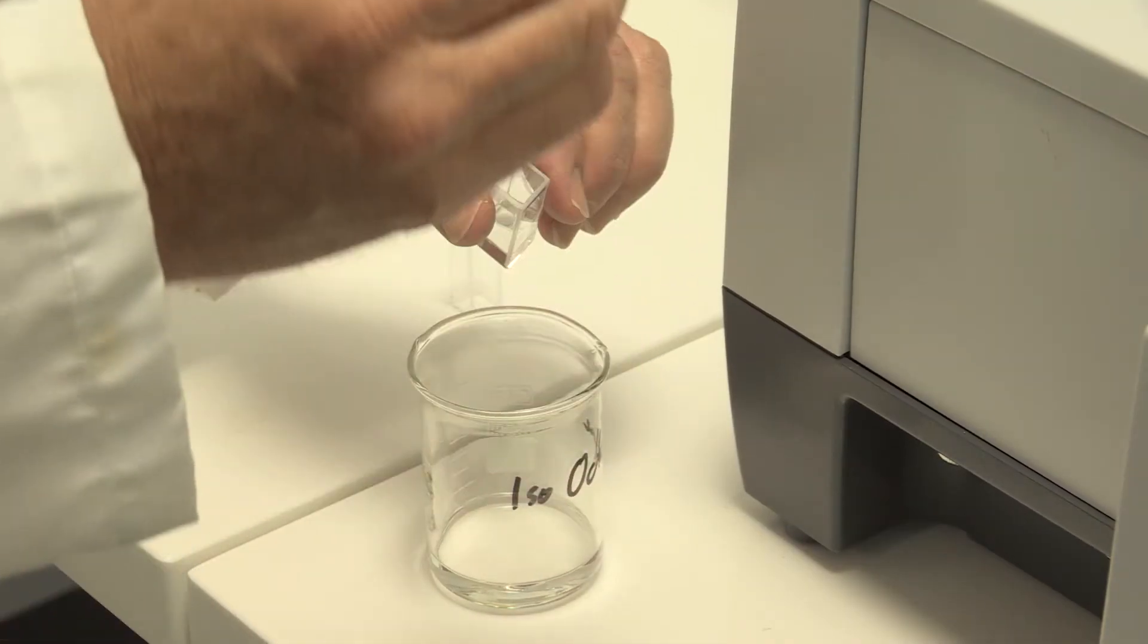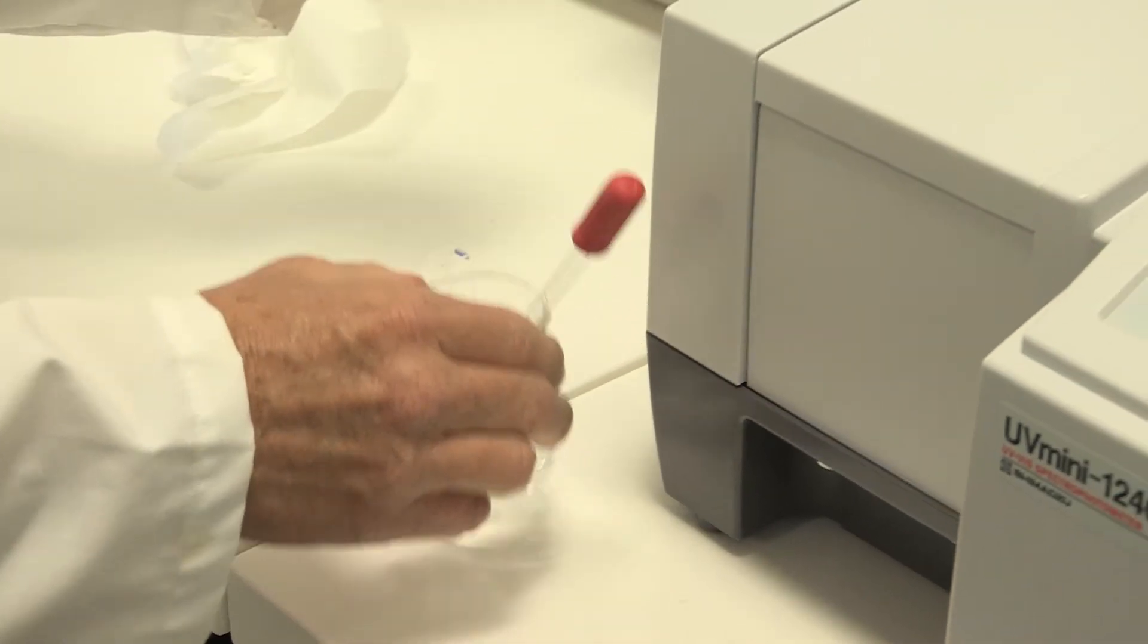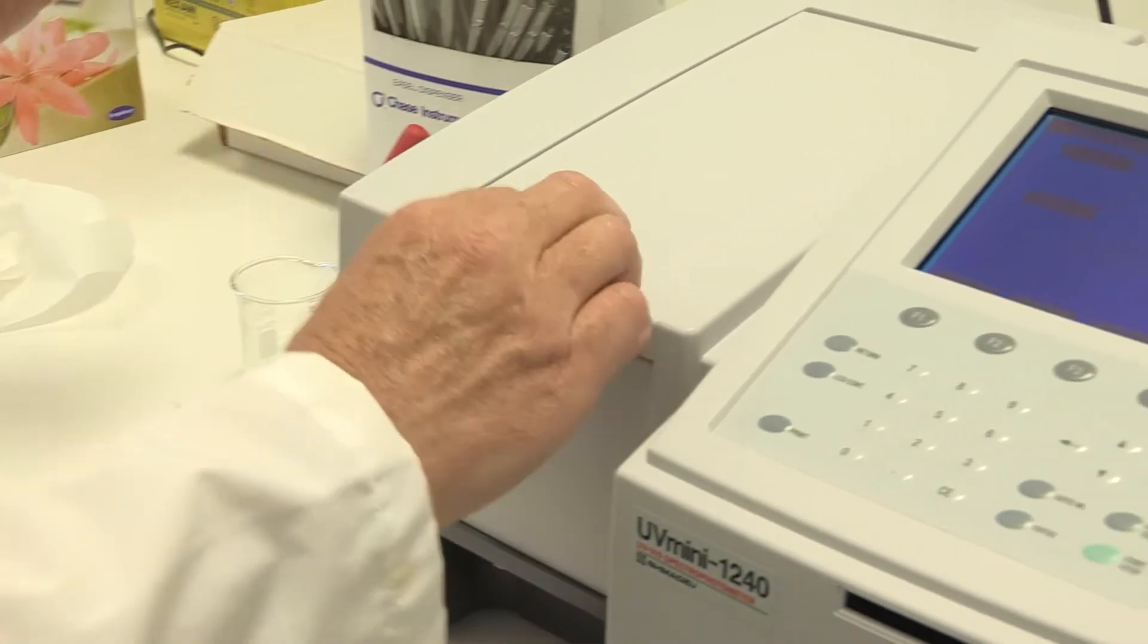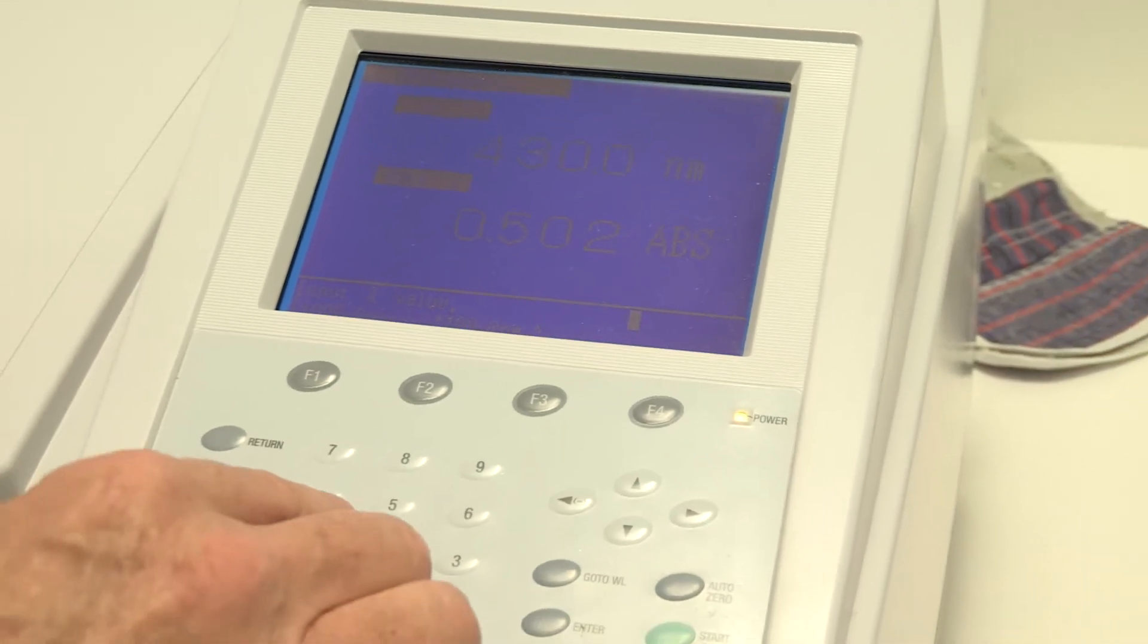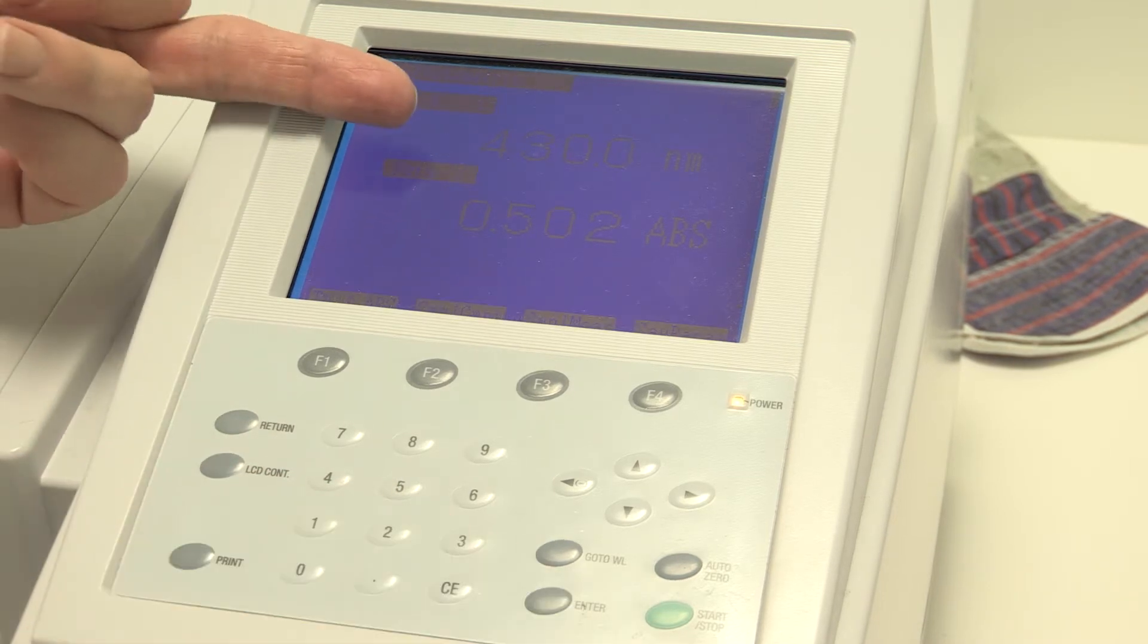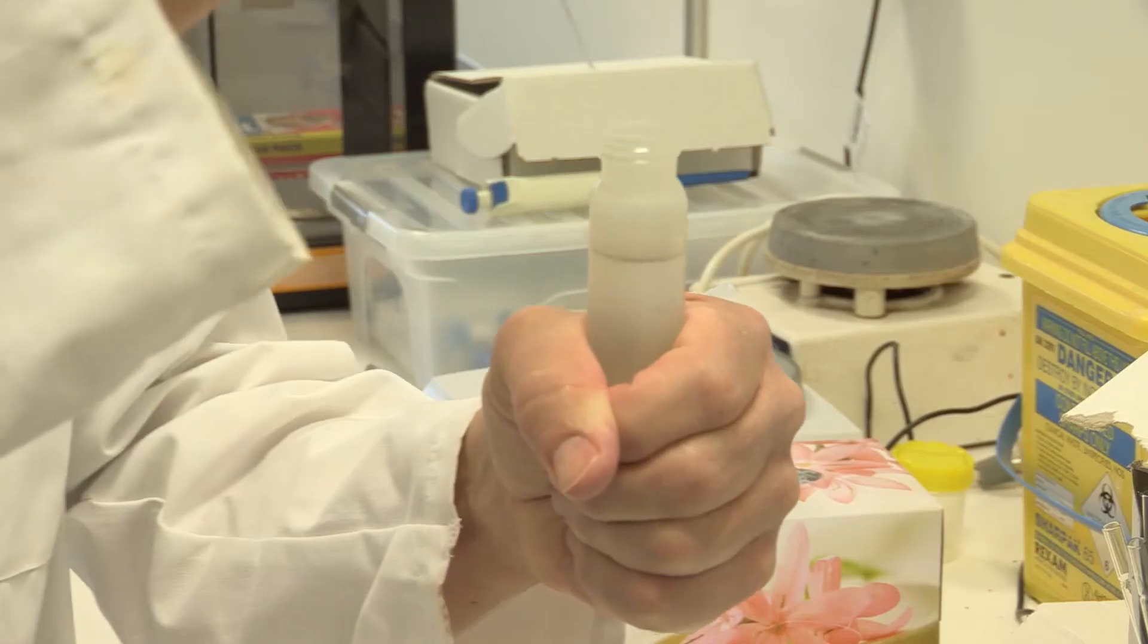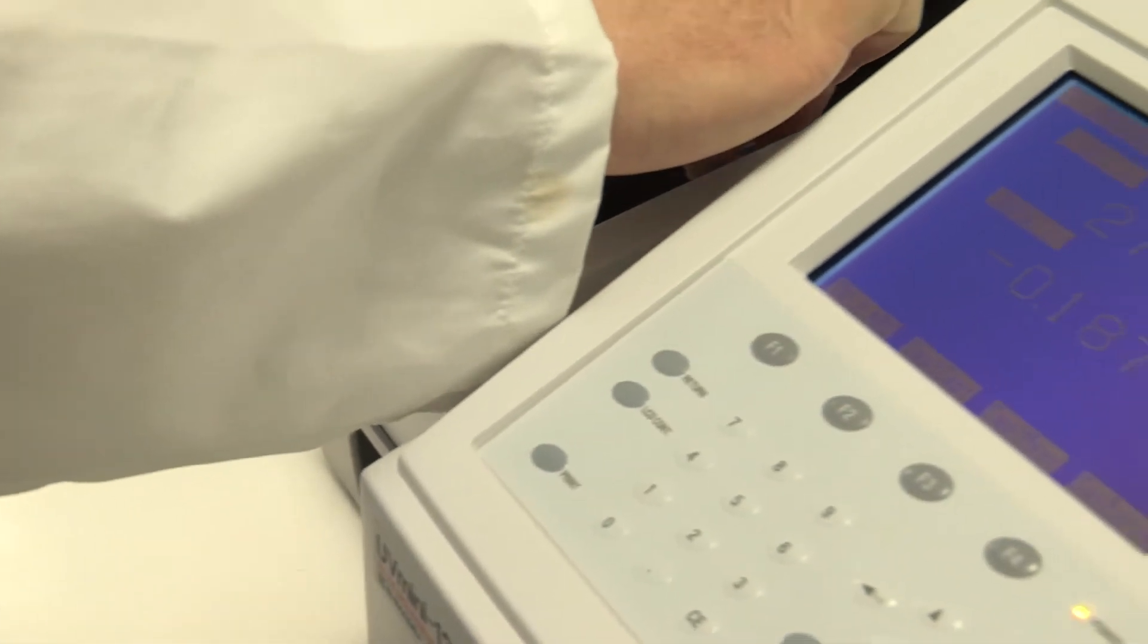Our spectrophotometer is zeroed against iso-octane using a quartz cuvette. The quartz cuvette allows us to read in the UV spectrum. The spectrophotometer is set at 275 nanometres and zeroed, and then we read the iso-octane that we have used to extract our beer with.